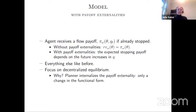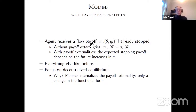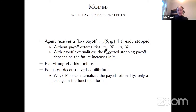Moving to the model with payoff externalities: everything else as before, but the payoff an agent gets from their car depends on the current stock at each instant of time, because the payoff depends on how many other people are also using the technology. Instead of a one-time stopping payoff, the agent receives a flow of stopping payoffs that depends on both private type and the current size of the stock.